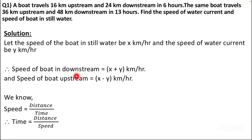Downstream means when the stream is flowing in the downward direction and you are also moving in the downward direction, so it becomes easier for you to travel. You can take the example of a slide — when you go from top to bottom you slide easily and smoothly. But if you want to go from bottom to top, you will require more energy and more effort.